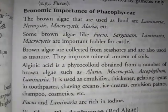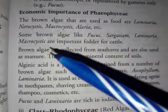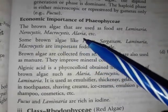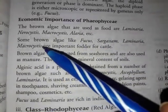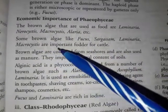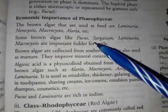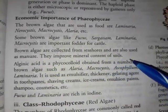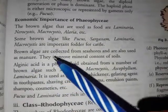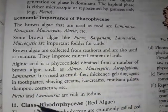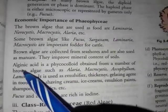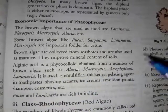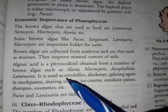Economic importance: brown algae used as food include Laminaria, Nereocystis, and Macrocystis. Some brown algae like Fucus, Sargassum, and Laminaria are important fodder for cattle and also used as human food. Brown algae are collected from seashores and used as manure — they improve the mineral content of the soil. Alginic acid is an important phycocolloid obtained from brown algae such as Alaria, Macrocystis, Ascophyllum, and Laminaria.